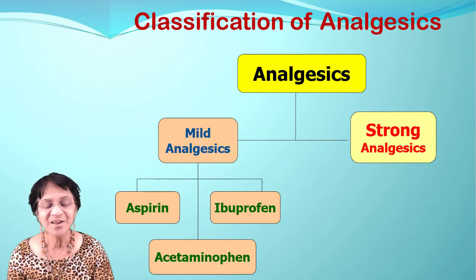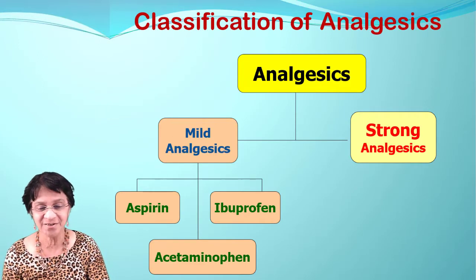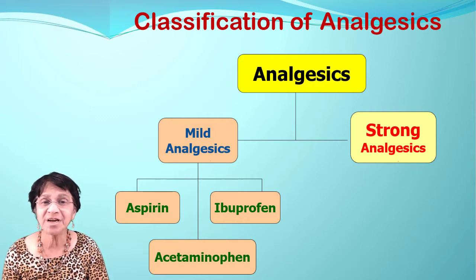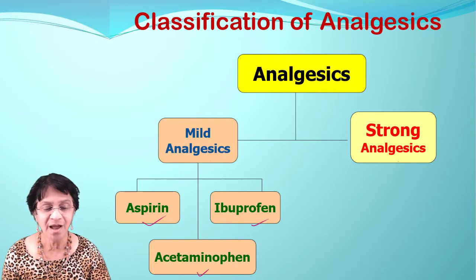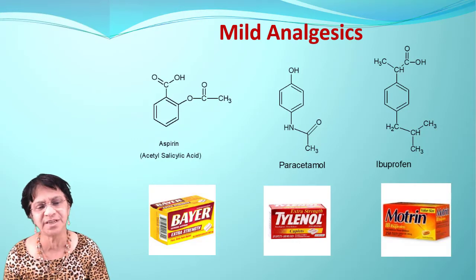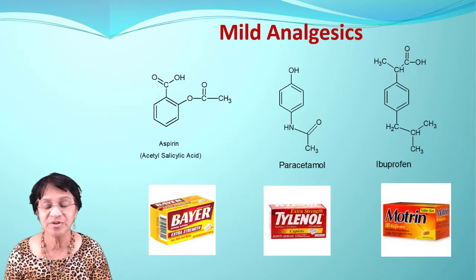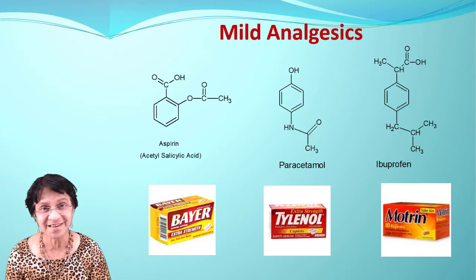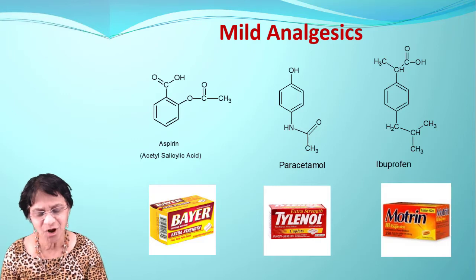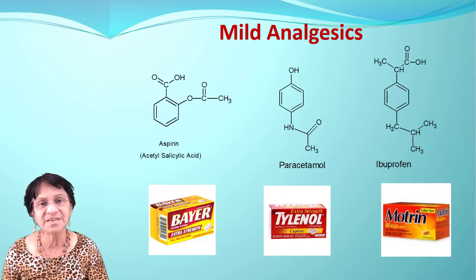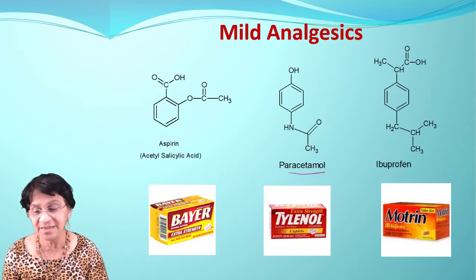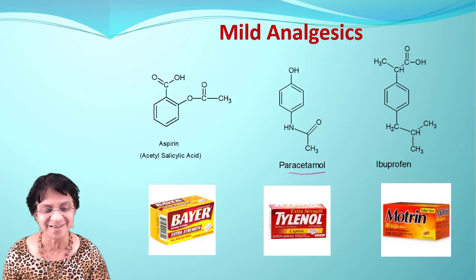The main simple over-the-counter mild analgesics are aspirin, acetaminophen (also called Tylenol), and ibuprofen. They are sold under various trade names — common aspirin is sold as Bayer, and store brands carry the same compound. Tylenol is also called paracetamol, and ibuprofen is also available over the counter. We have a separate video on their structures, but here we'll discuss structure and activity together.